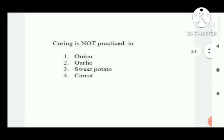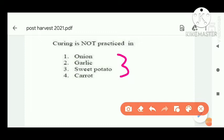Question number two: curing is not practiced in which of the following? The first three options — onion, garlic, and sweet potato — curing is done. But in carrot, curing is not done. Generally, in bulb crops and tuber crops, curing is done.